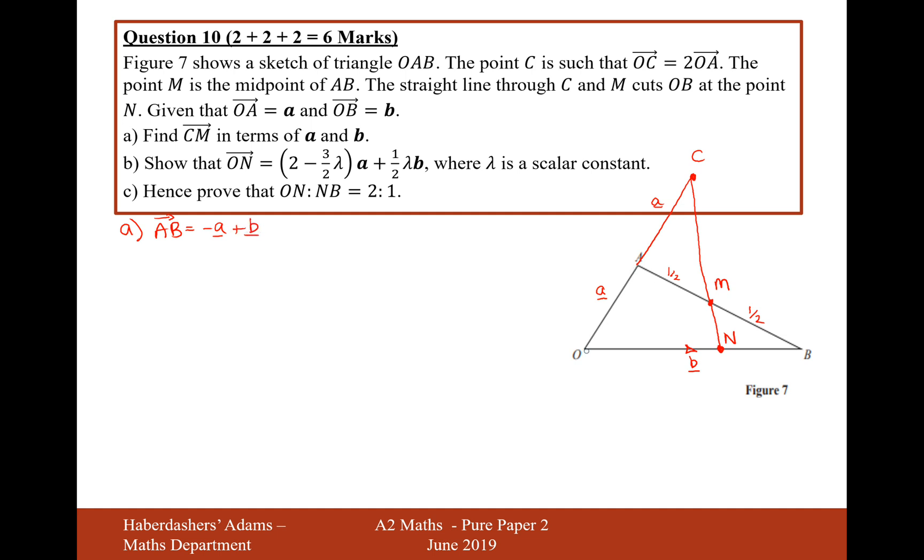AB is going to be minus an a and then plus a b. So we go backwards along the a and upwards along the b. Then we can go from A to M by just doing half of both of these two things here. So it's going to be minus a half of a and plus a half of b. The next thing we need to do is get from C to M. We now know how to get from A to M. So it's just backwards along an a and then add on the rest of this vector here. So backwards along an a and then add on AM, which is minus a half of a plus a half of b. And then if we combine this, it's going to be minus three over two a plus half of b.